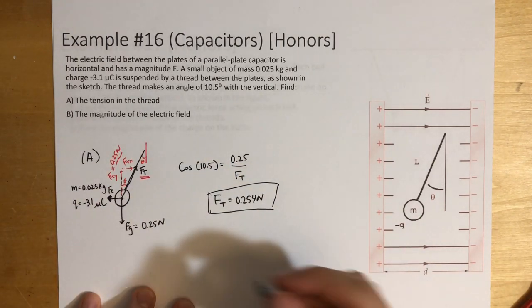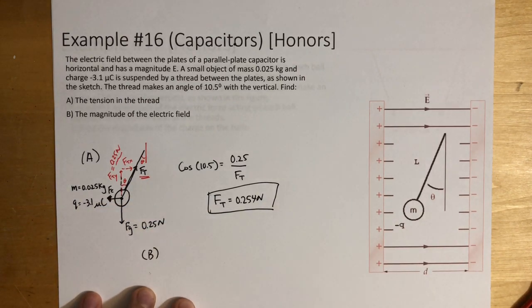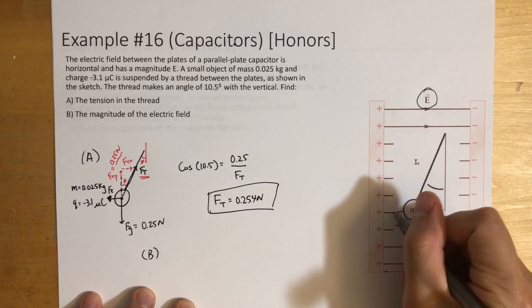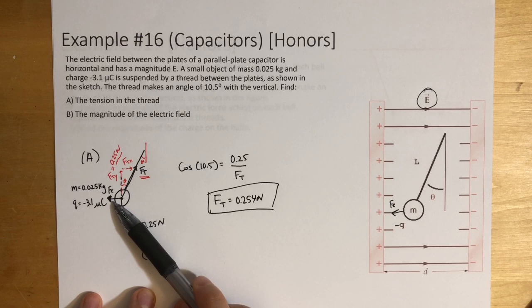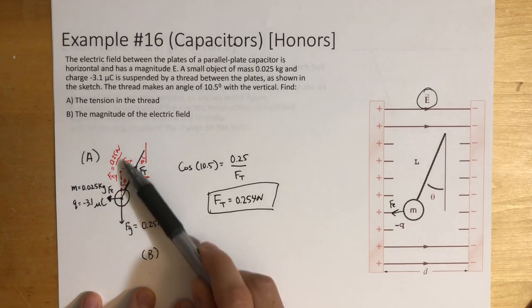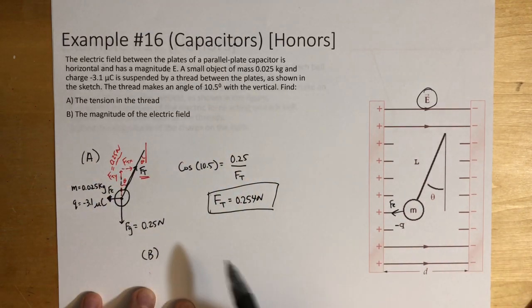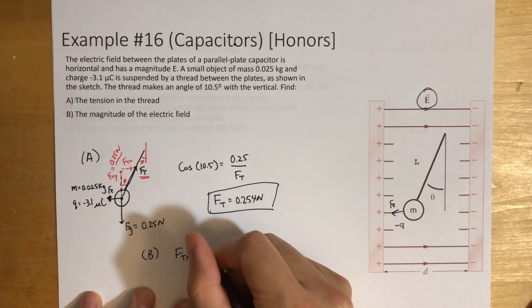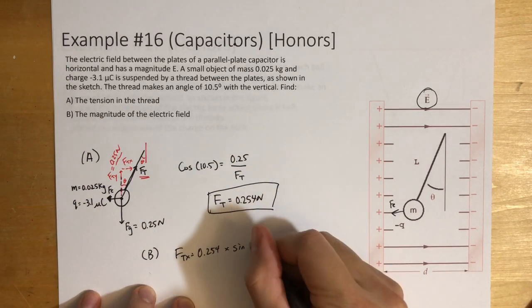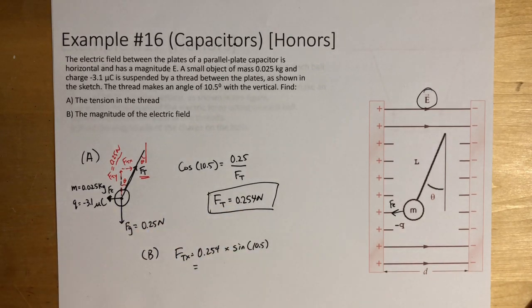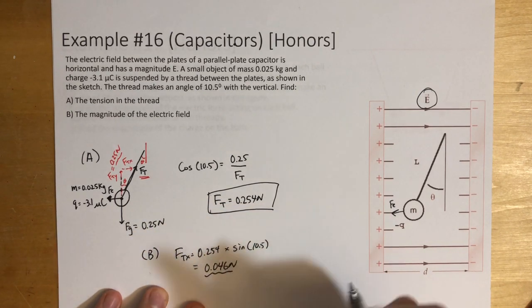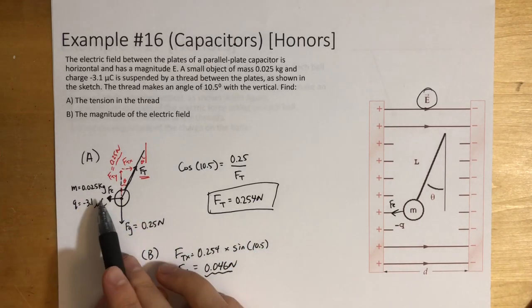Now it's asking for the magnitude of the electric field. To find that, we first need the force of electricity. Since this is equilibrium, the force of electricity equals the force of tension in the x direction. So force of tension in x equals 0.254 times sine of 10.5, which gives us 0.046 newtons. This is also equal to the force of electricity.